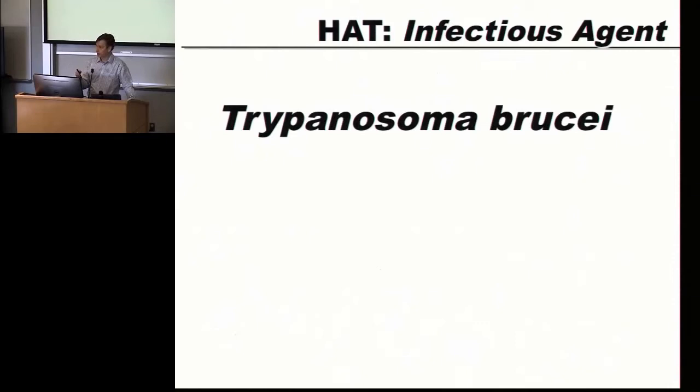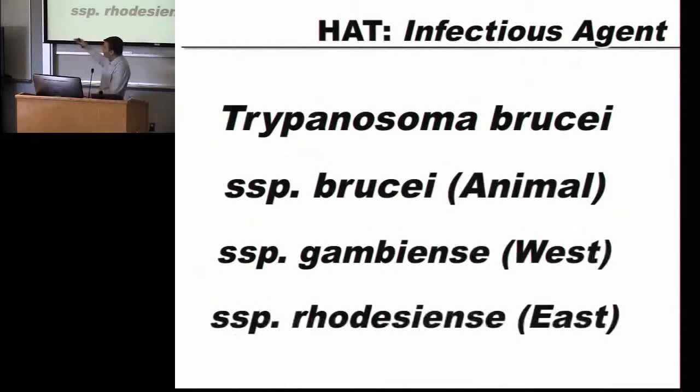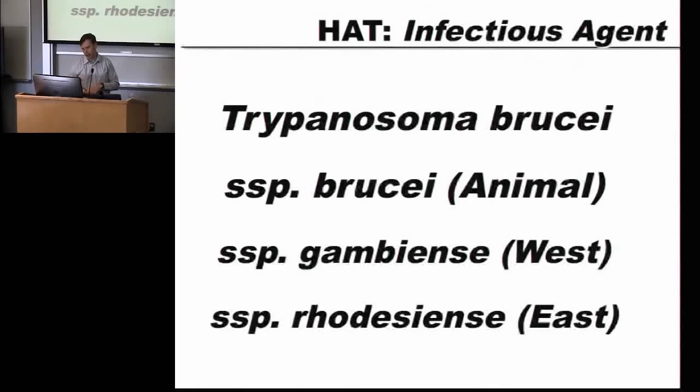There are two sub-flavors of T. brucei. One is subspecies Gambiense — West African disease; think of the Gambia in West Africa. One is Rhodesiense — East African disease; think of the old name for Zimbabwe, Rhodesia. There is also an animal form called T. brucei brucei, which doesn't infect people but causes a terrible wasting sickness of cows. For agricultural and developmental reasons that is nationally important, but not important from a clinical medical perspective.